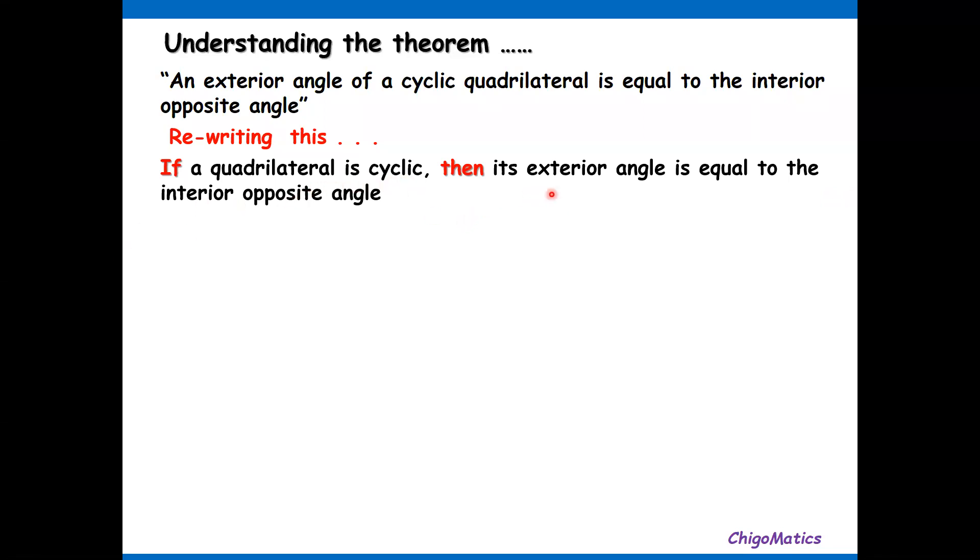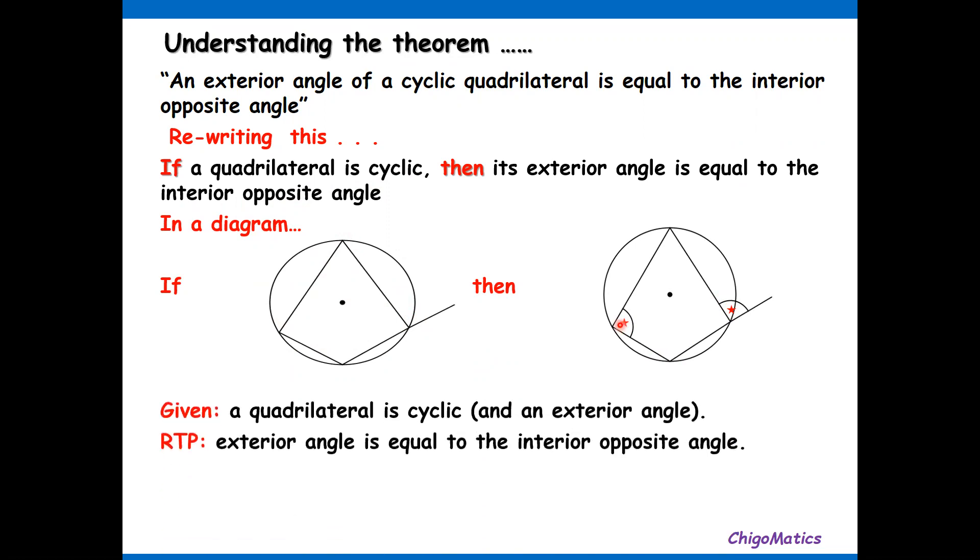We can put this in a diagram. Here is the cyclic quad and this is the exterior angle. Then we can conclude that this exterior angle is equal to this one. So the given represents the hypothesis, they require to prove the conclusion.